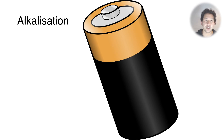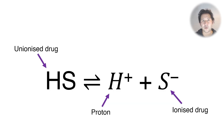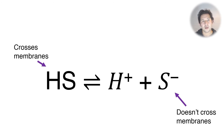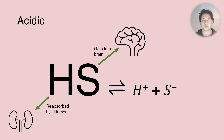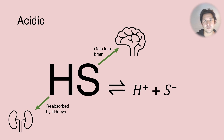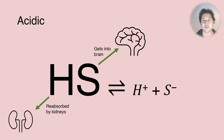Alkalization of the urine is very important and it works like this. Aspirin starts as an unionized drug and then dissociates to form a proton and the ionized form. The unionized form of salicylic acid can cross membranes whereas the ionized form doesn't. In an acidic environment we get a lot more of that unionized form, which can get into your brain and easily get reabsorbed by the kidneys — so it's a much more toxic drug in acidic environments.